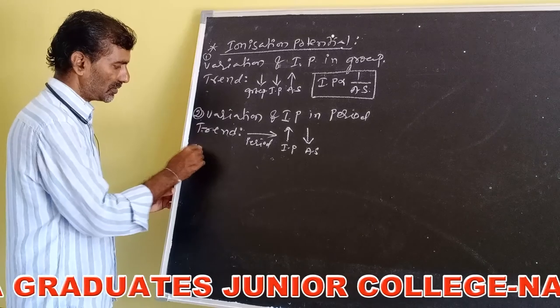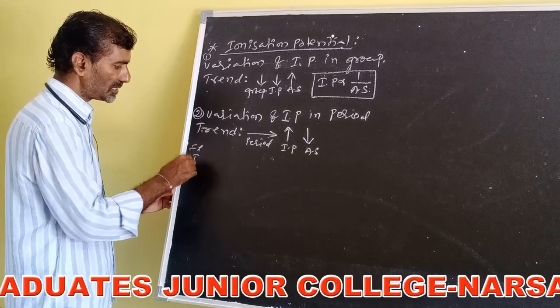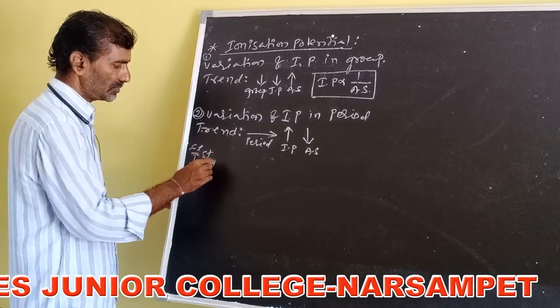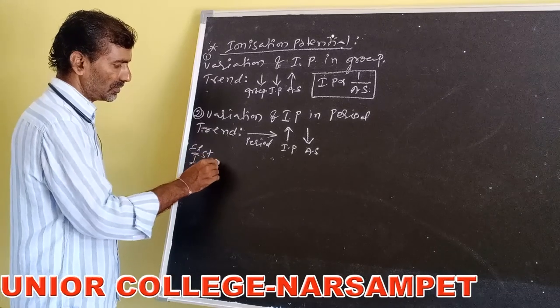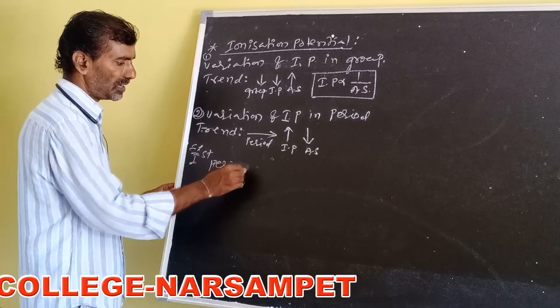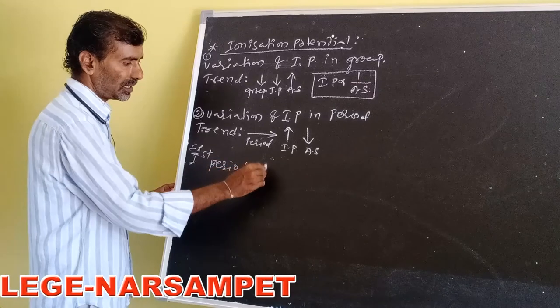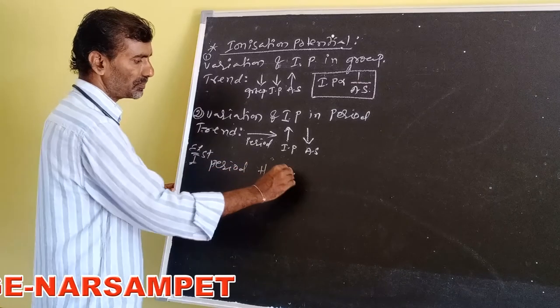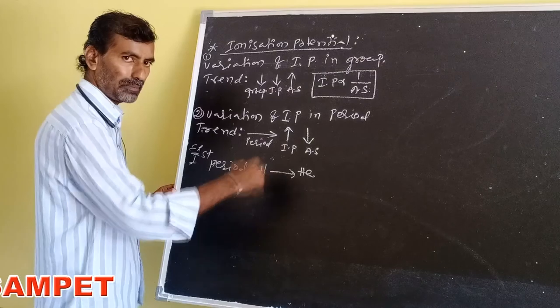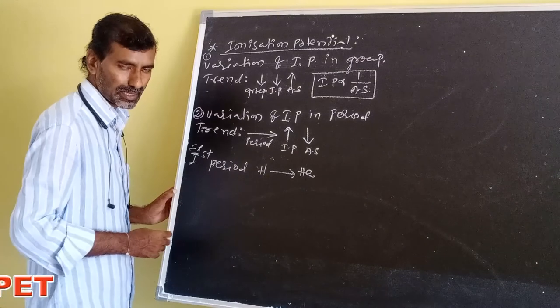In the first period, from left to right — hydrogen to helium — IP values increase with no exceptions.